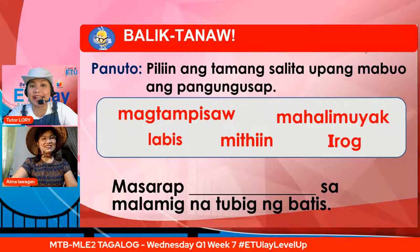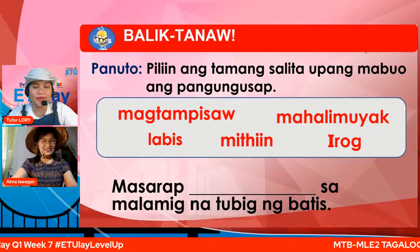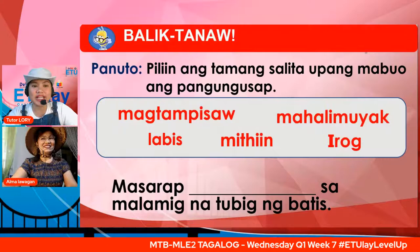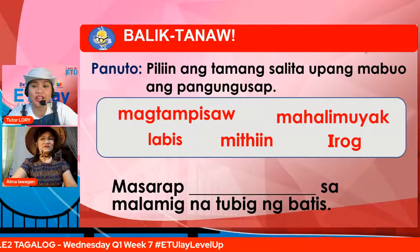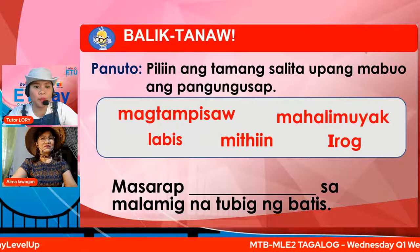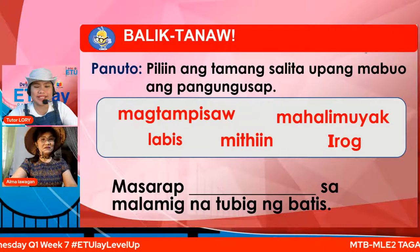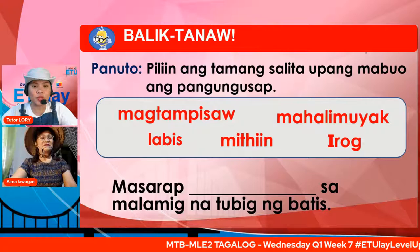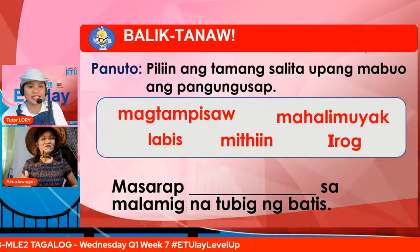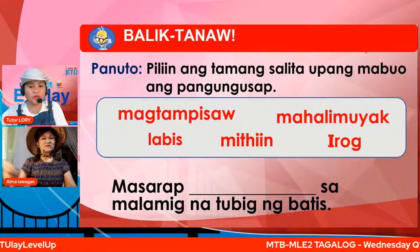Ngayon, atin nang tuklasin kung kayo nga ba ay natuto. Suriin natin at sukatin ang inyong kaalaman. Panuto: piliin ang tamang salita upang mabuo ang pangungusap. Bilang isa — masarapat lang sa malamig na tubig ng batis. Pipiliin ninyo ang angkop na salita mula sa kahon upang madugtungan ang pangungusap. Ano kaya ang masarap gawin sa tubig ng batis? Magtampisaw, mahalimuyak, labis, miti, o irog? Kung ang sagot mo ay magtampisaw, ikaw ay tama.